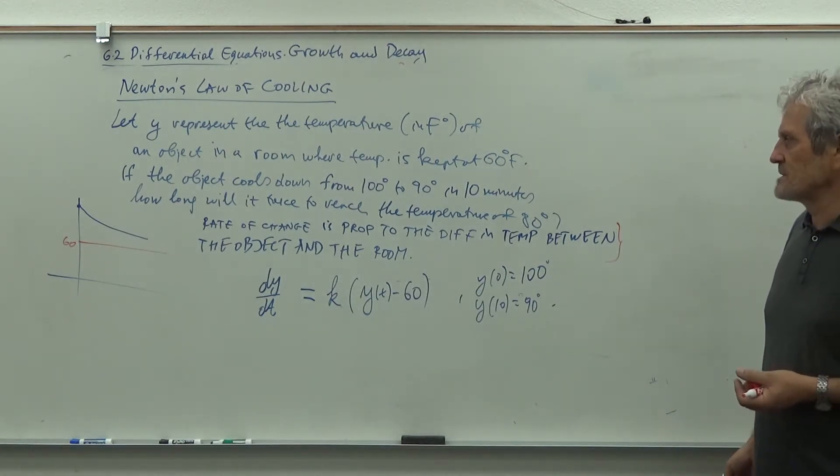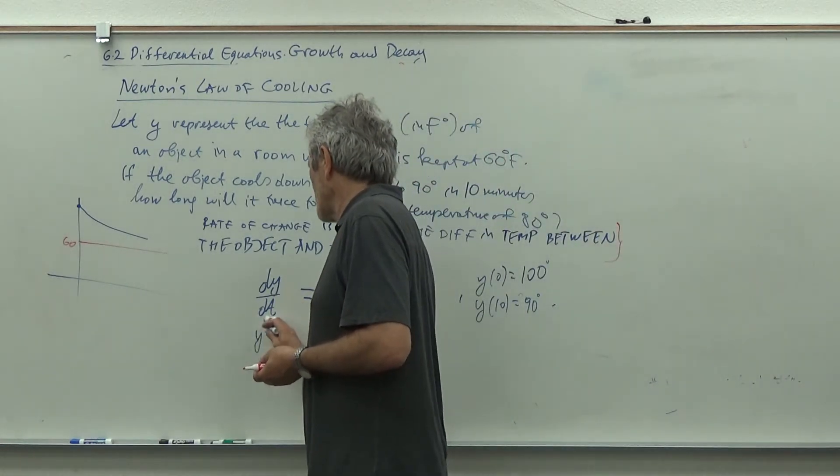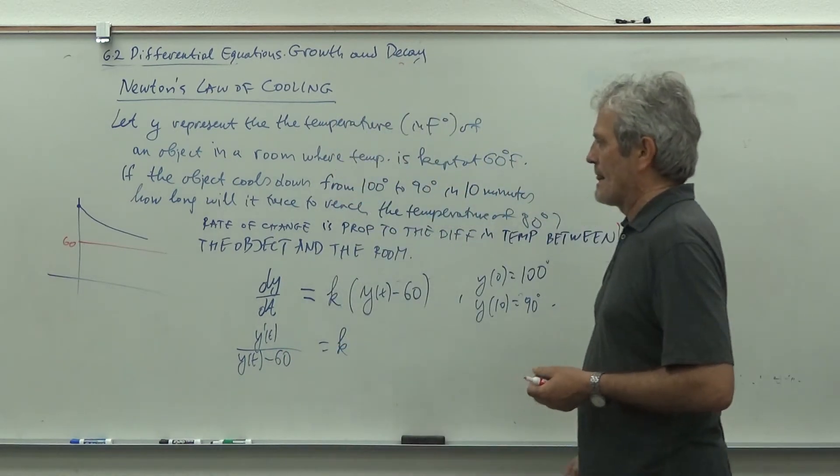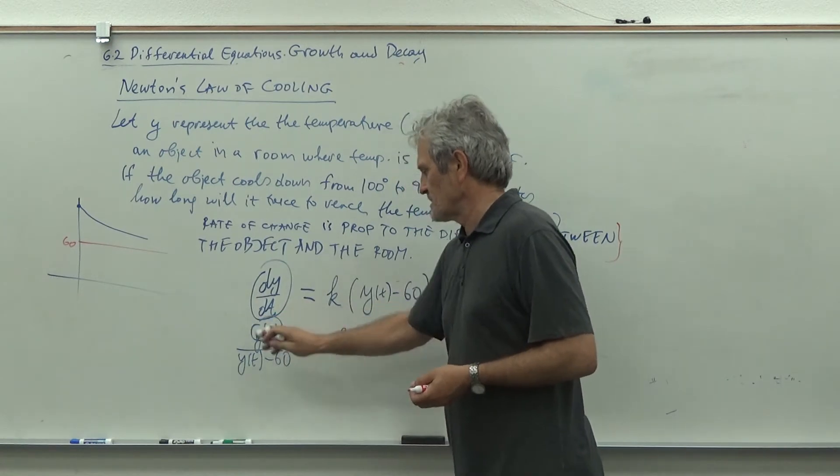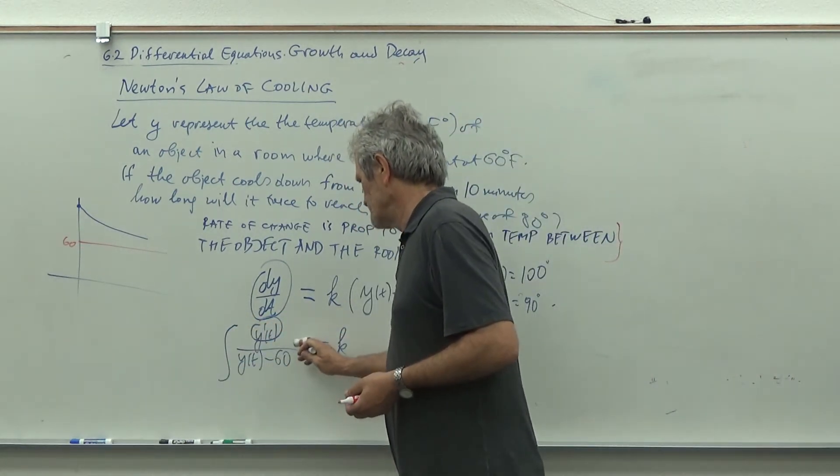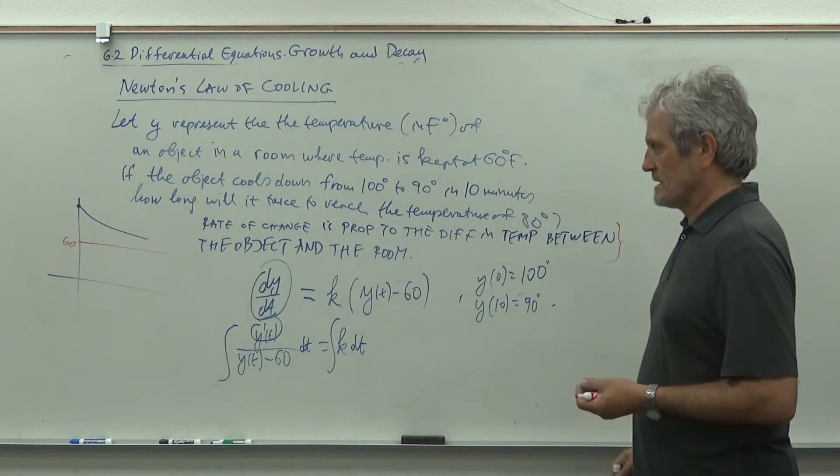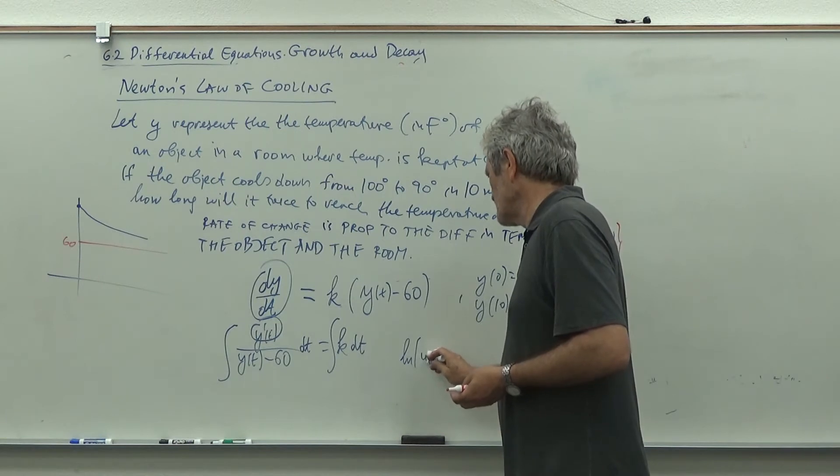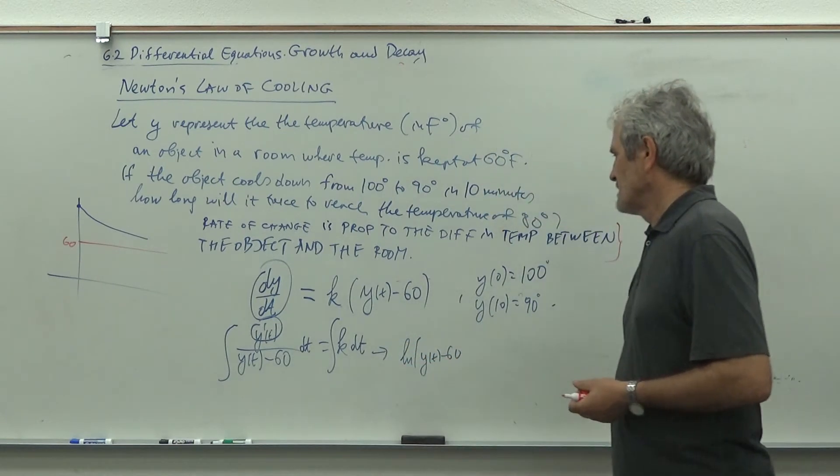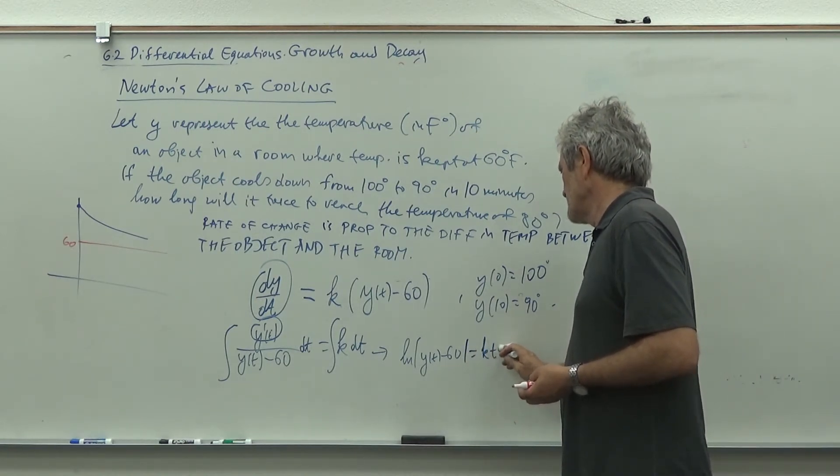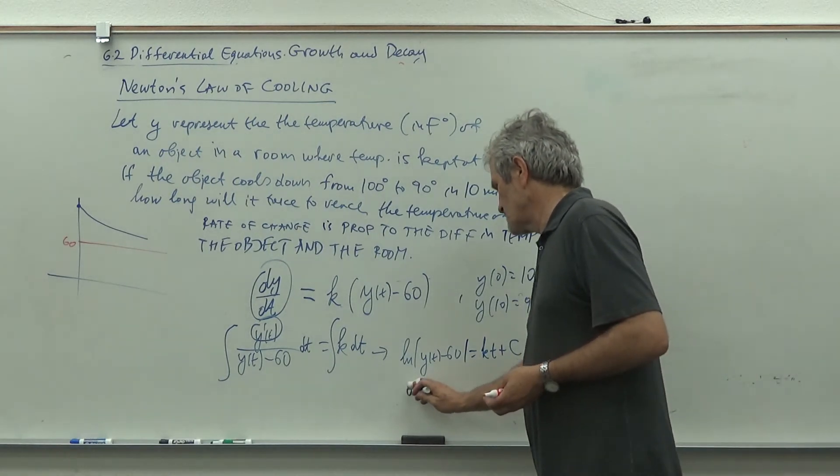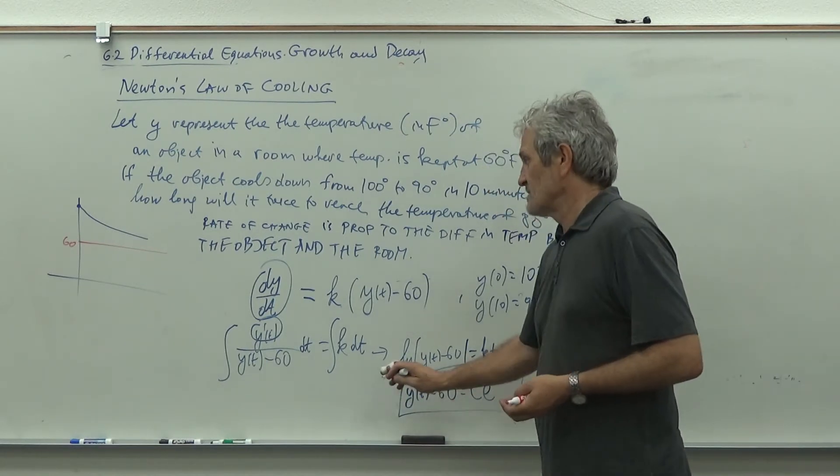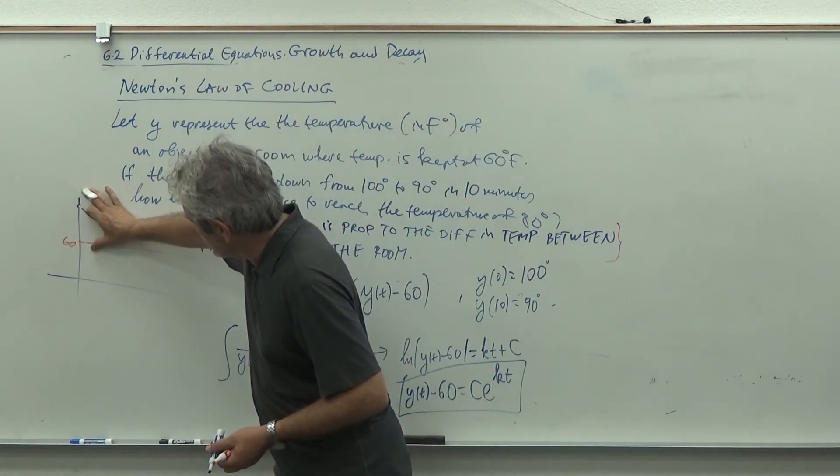Now we need to solve this problem the same way as we did a minute ago. I think it's easier to see what we are integrating when I write dy over dt as y prime. So we get y prime over y minus 60 equals k, and integrate both sides with respect to t. This is u prime, I get ln of absolute value of y of t minus 60 equals kt plus c. From here we get y of t minus 60 equals C e to the kt. That's what we said: the difference is decreasing.